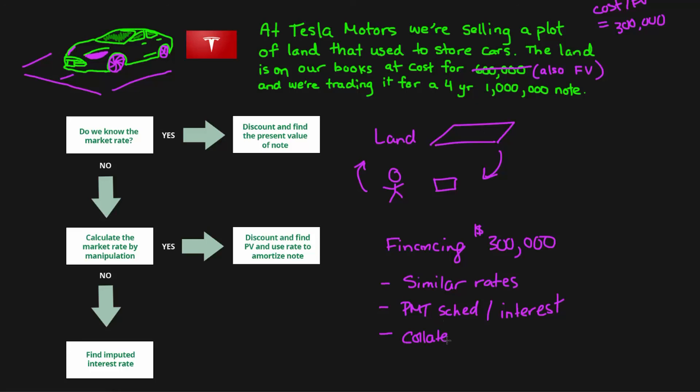And the collateral. Collateral also reduces risk. If they offer us a certain amount of collateral with the $300,000 note, then we might have a smaller market or effective rate. All of these different factors taken into account can determine our imputed interest rate.